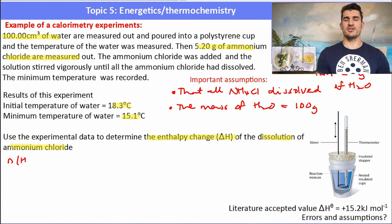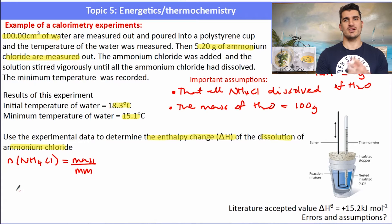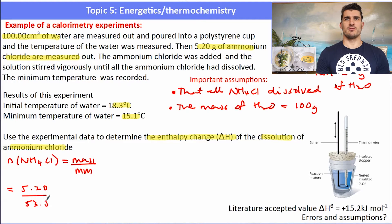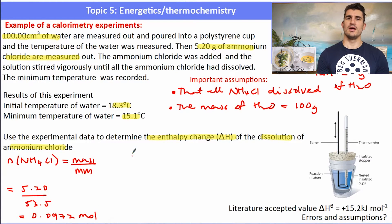We're asked to determine the enthalpy change ΔH for the dissolution of ammonium chloride. First, work out the number of moles of NH₄Cl: mass over molar mass. The mass is 5.2 grams and the molar mass of ammonium chloride is 53.5 g/mol, giving 0.0972 moles.